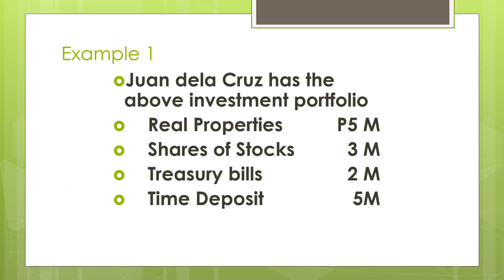Why do you need to split it? Because the PDIC insurance on our savings or deposit accounts in a bank is secured up to 500,000 pesos only. If you have 1,000,000 pesos in one bank and that bank goes bankrupt, you could just recover half of it since the insurance only covers up to 500,000. This is how Juan de la Cruz diversified his investment portfolio: 5,000,000 in real properties, 3,000,000 in shares of stocks, 2,000,000 in treasury bills, and 5,000,000 for time deposit — different types of investment.